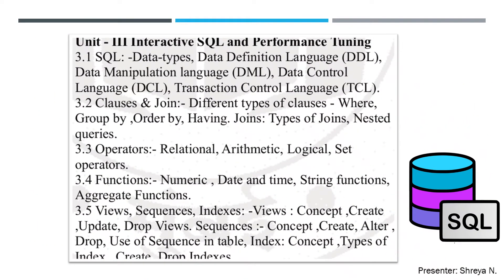In Unit 3, there are five total points. The first point is SQL (3.1), then 3.2 is Clauses and Joins, 3.3 is Operators, 3.4 is Functions, and 3.5 is Views. Out of all this, we are going to cover SQL (3.1) today.